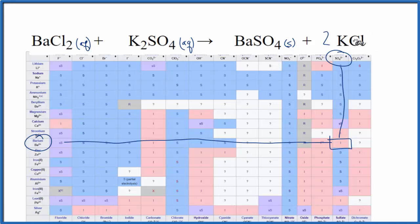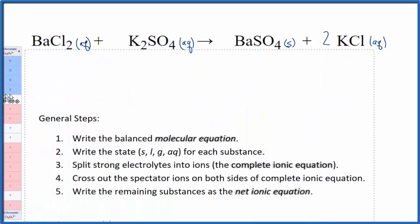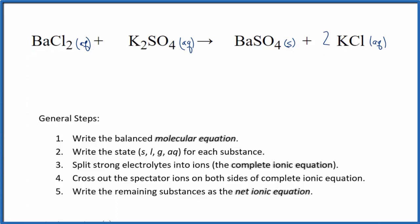For chlorides, very soluble, so we're going to write aqueous — that should dissolve in water and dissociate. So now we have our states. Next, we're going to split the strong electrolytes up into their ions. That'll give us the complete ionic equation.